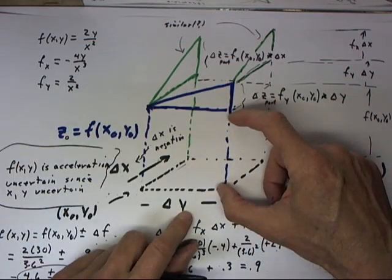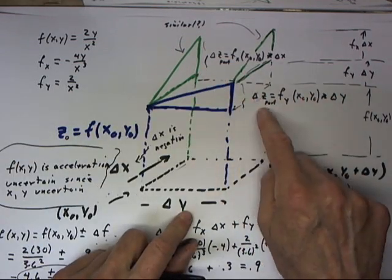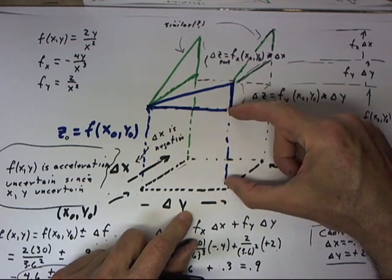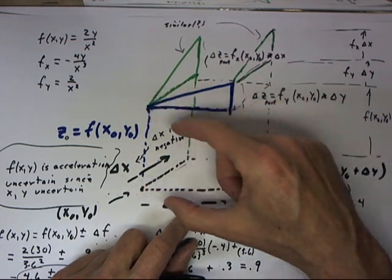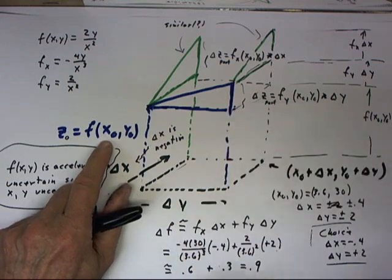Similarly, as we move in this direction, we add our delta z for the y direction onto the original value of z, the value of z0 equals f of x0, y0.